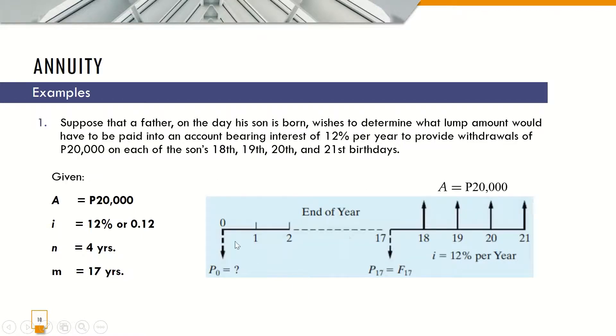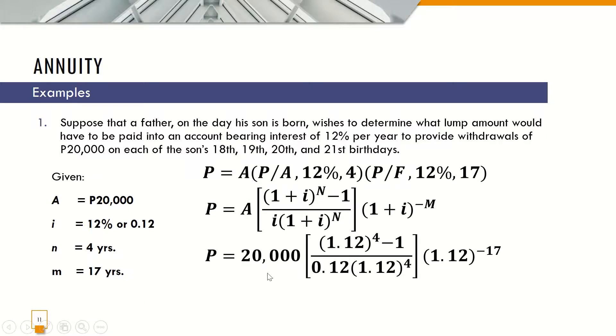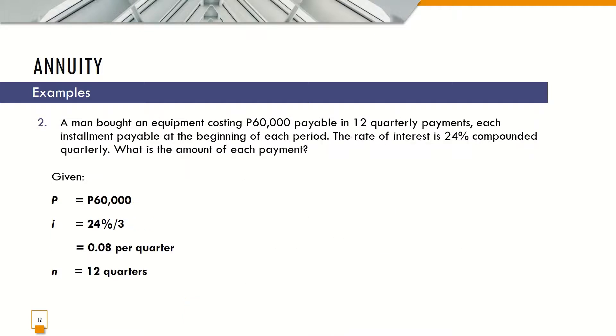This is our cash flow diagram. We have to find for P, the present value at 0. And our annuity payments is from 18th to 21st birthday. In finding for P, that is our formula in symbolic form. P equals 20,000 times 1.12 raised to 4 minus 1, all over 0.12 times 1.12 raised to 4, times 1.12 raised to negative 17. This quantity will result to 3.037, and this quantity will result to 0.1456. P equals 8,847 pesos and 45 centavos.